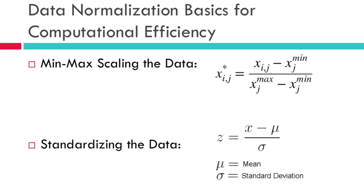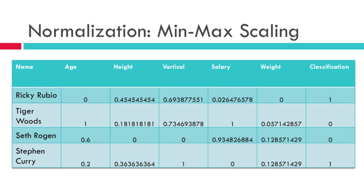Here are some very common ways to normalize the data. The first is min-max scaling — basically normalize each column by the min and the max. Here is a min-max scaling of the same basketball player example. This brings each column into the same range between 0 and 1, which will make it easier to classify — maybe not to the eye as a human, but to the computer it's much easier.